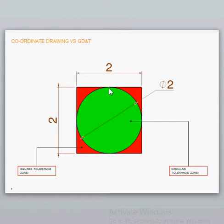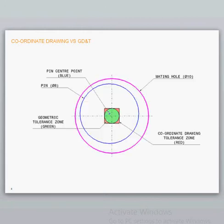How does that affect us? If we consider the pin center point as the blue point and the pin diameter as diameter 8, and the tolerance zone in green...